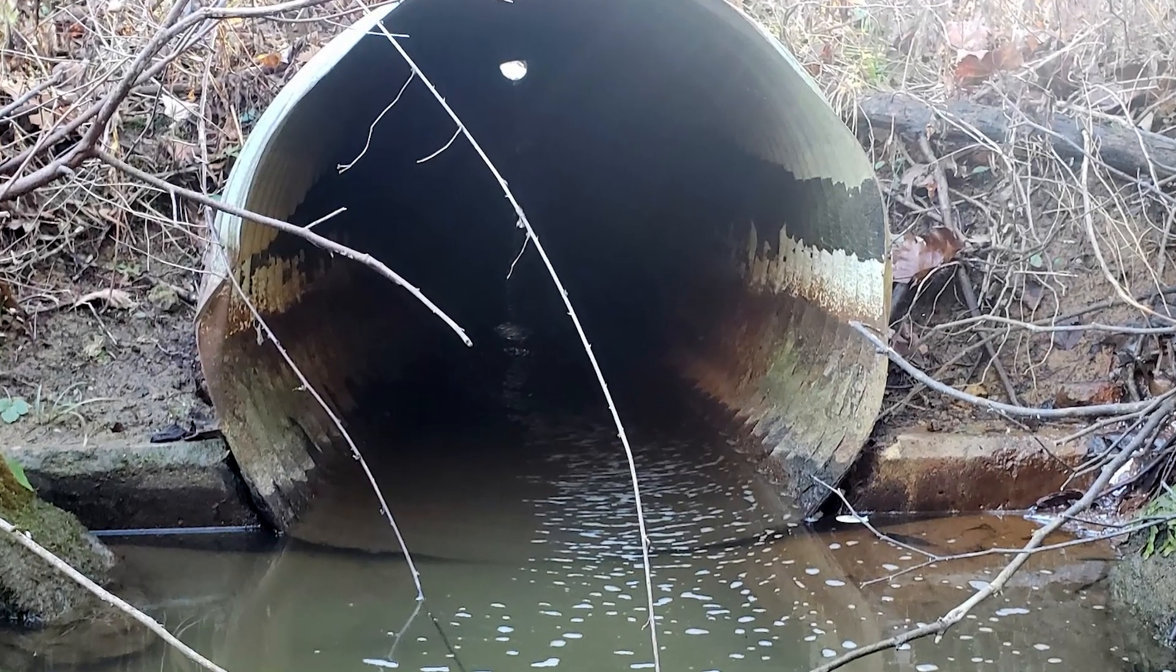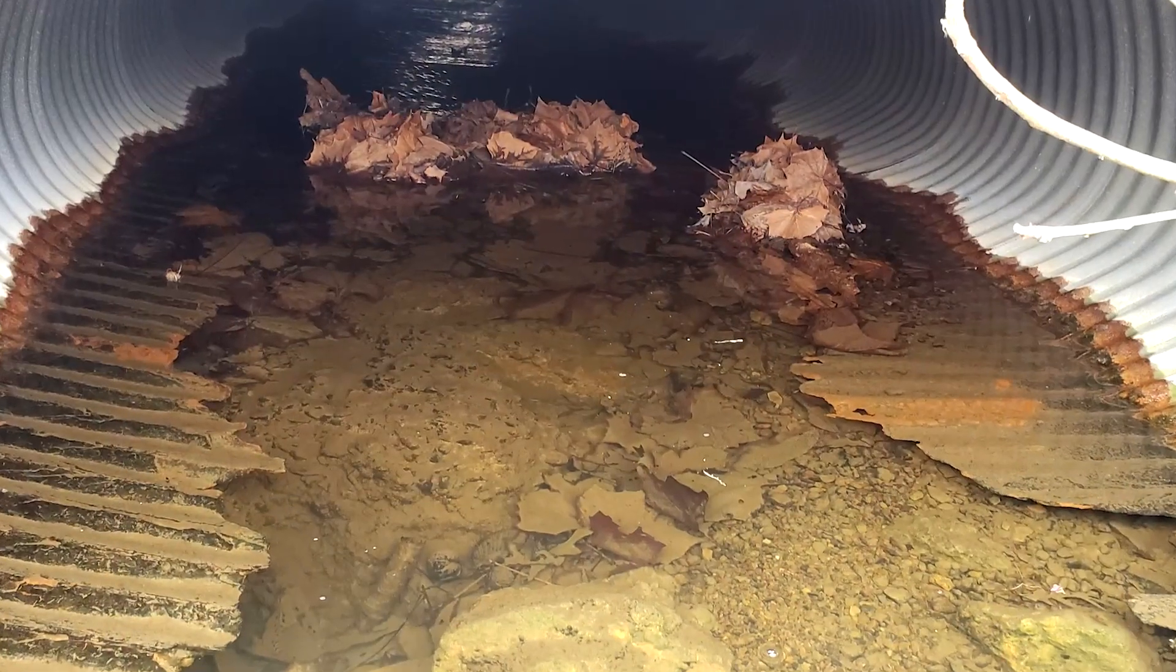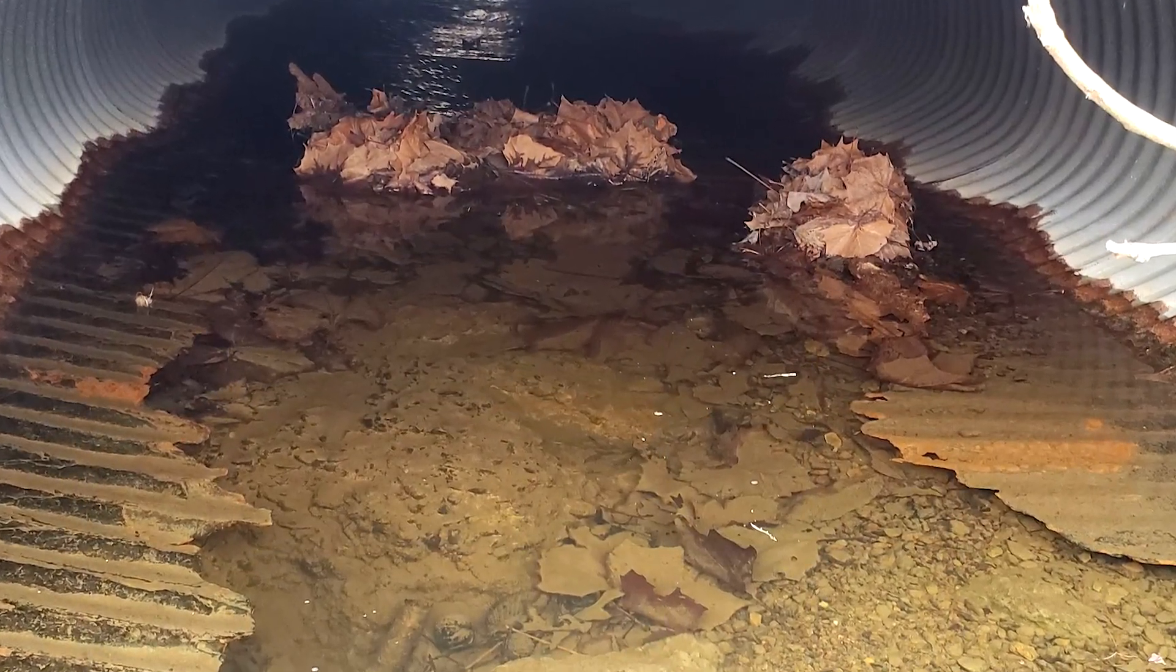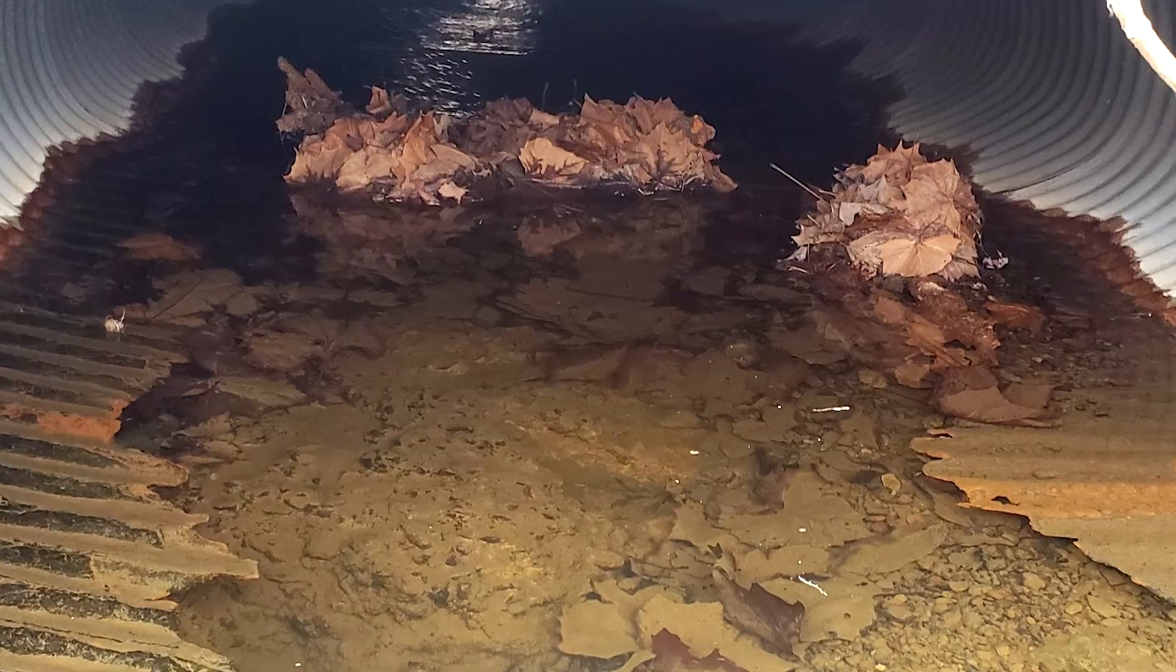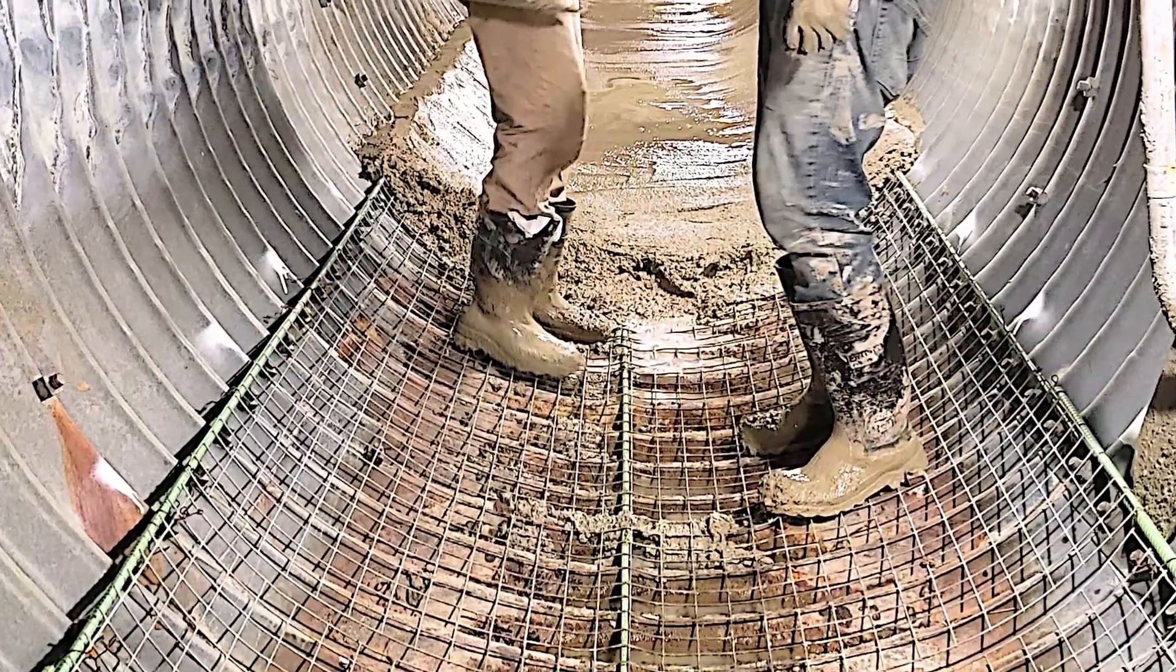The invert is commonly the first portion of pipe to show signs of degradation due to it being most frequently in contact with the water. Hydrotech will go in and add a layer of concrete to extend the life of these aging culverts.